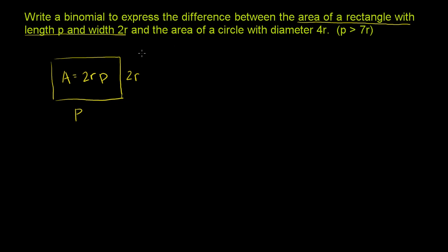Now, we also want to find the difference between this area and the area of a circle with diameter 4r. So what's the area of the circle going to be? So let me draw our circle. So our circle looks like that. Its diameter is 4r. How do we figure out the area of a circle?